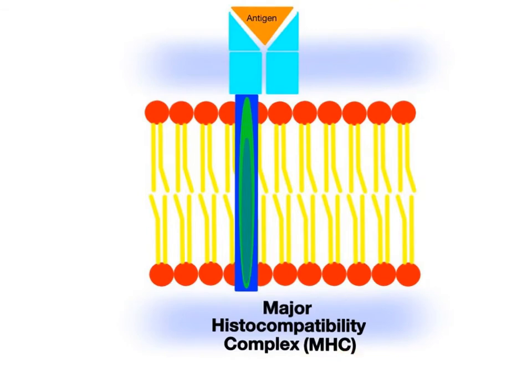MHC proteins are another type of cell identity marker, where MHC stands for Major Histocompatibility Complex. Histo refers to tissue, and these proteins play a role in tissue compatibility. If an organ is rejected in a transplant surgery, it's usually because there is a mismatch between the MHC proteins of the organ donor and the recipient.